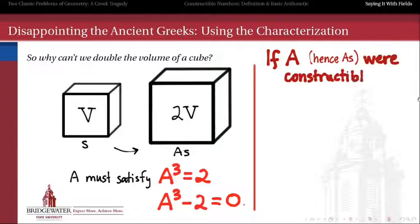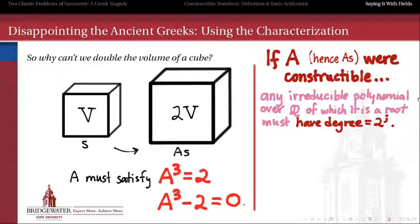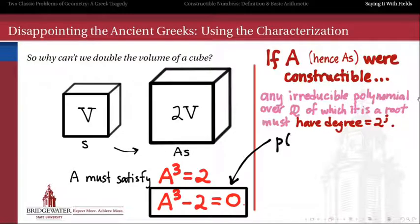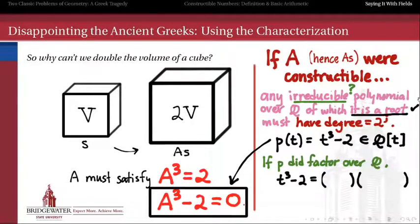But that must mean that a is a root of the polynomial t cubed minus 2 is equal to 0. And here's the rub. If a were a constructible number, then according to the constructible number theorem, any irreducible polynomial that a satisfies must have a degree which is a power of 2. Otherwise, we'd be in violation of the theorem that we just proved. But here is an example of a polynomial of which a is a root, t cubed minus 2. But is it irreducible? There's the question.